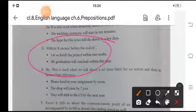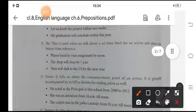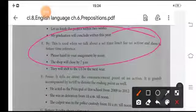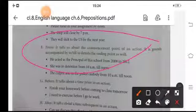And it is also used when we denote a future event, that the wedding ceremony will start in 10 minutes. Within means before the end of, like let us finish the project within two weeks. By, the by will be used when we talk about a set of time limit for an action and shows the future time reference. From, it tells us about the commencement point of an action. For example, she was in detention from 10 a.m. till noon. It is also generally accompanied by to till to denote the ending point as well.